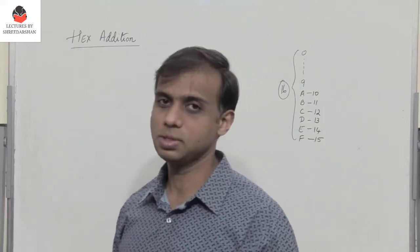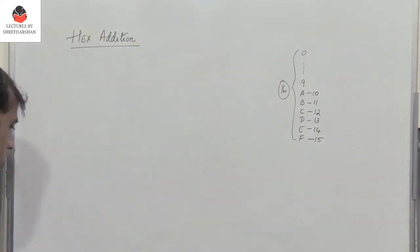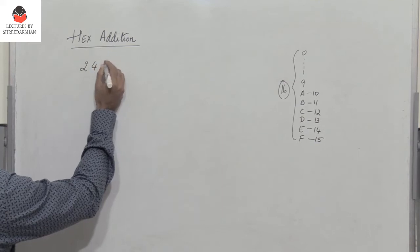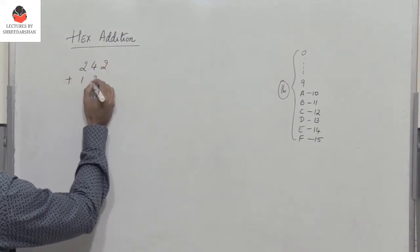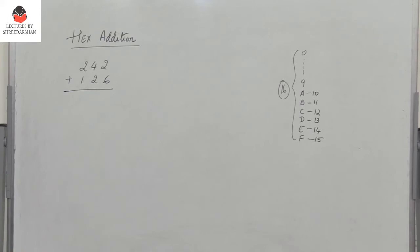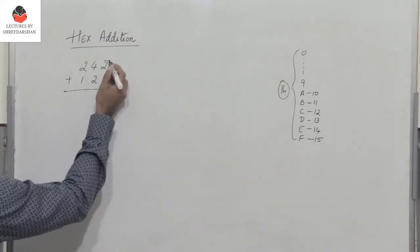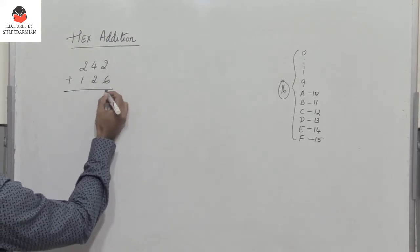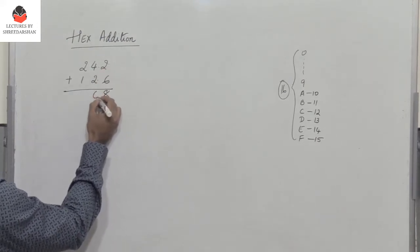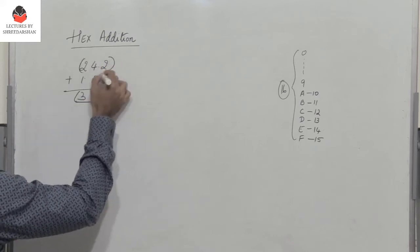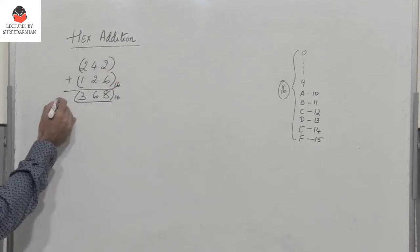Let's take a few examples. In the first case, I have two numbers: 242 plus 126. When I add these two numbers, none of the digits go beyond 15, so it's a simple addition. 6 plus 2 is 8, 4 plus 2 is 6, 2 plus 1 is 3. So the result is 368 in hex. Remember, all the numbers are hexadecimal numbers.